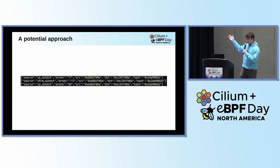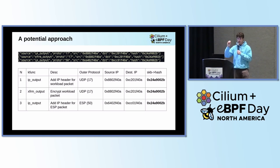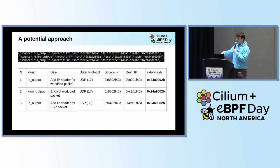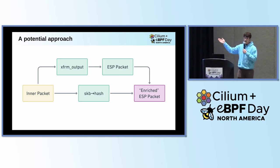Looking at some output from the transmit side — read top to bottom — we see a call to IP output with a UDP packet being sent out needing an IP header. Then a call to XFRM output with that UDP packet, where the kernel puts an ESP header on it. Then that last call to IP output to add the IP header onto the ESP packet. The key thing is that the hash stored in the SKB is the same for all of these. Even though on the last call to IP output we're dealing with an entirely different ESP packet with the node source and destination IPs, we still have that inner packet hash. So we can use that as our context piece — take that hash, put it into the ESP packet, and send it on its way for RSS.